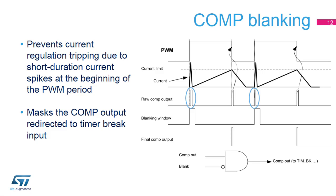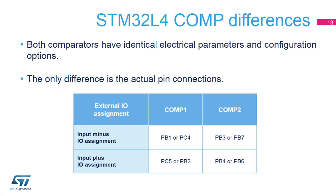These pulses need to be masked by a blanking window to avoid false fault detection. The blanking window waveform can be generated by one of the timer output channels. Both comparators have identical electrical parameters and configuration options. The difference in input interconnections are summarized in this table. For the difference in output redirections, please refer to the product data sheet.